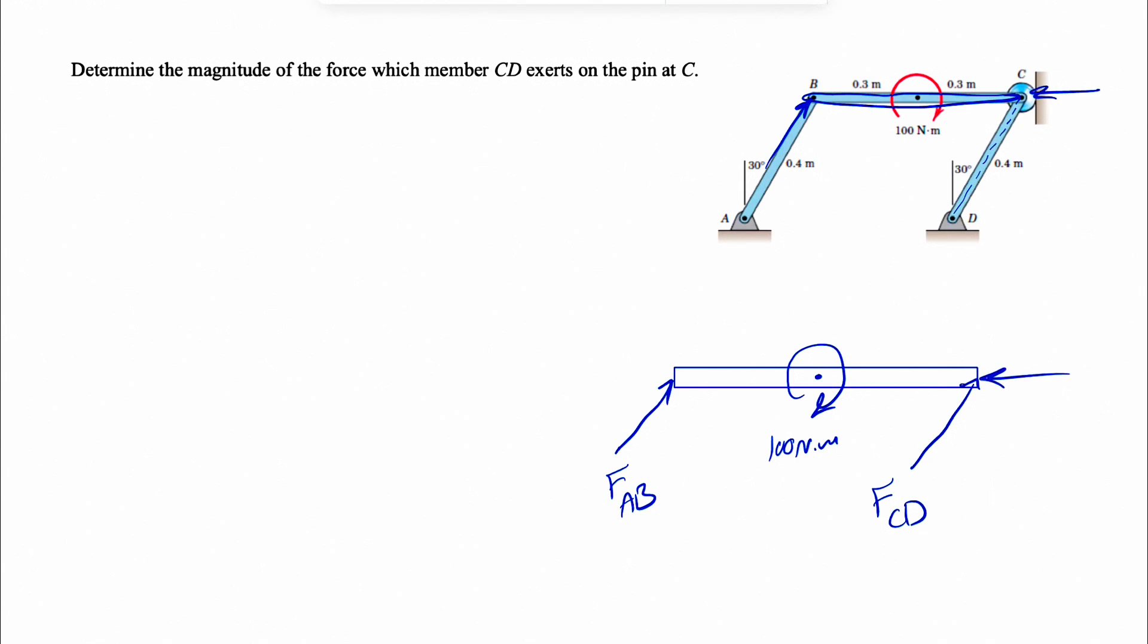Since we have a roller at point C, there will be a normal force from the wall to that joint. We can call that one NC, the normal force applying to the joint. That's pretty much all the forces we have. We also know that this angle here is 30 degrees. This one will be 30 degrees as well. We're going to have the same thing here.